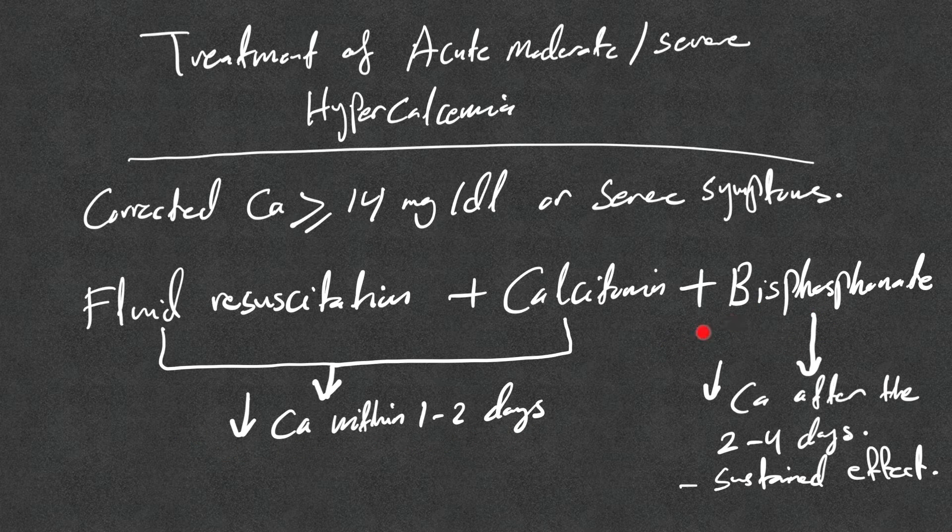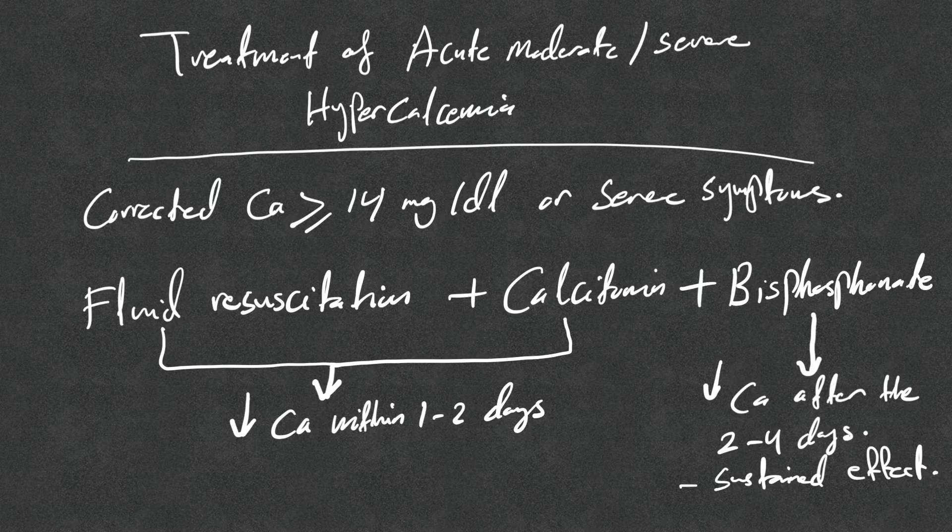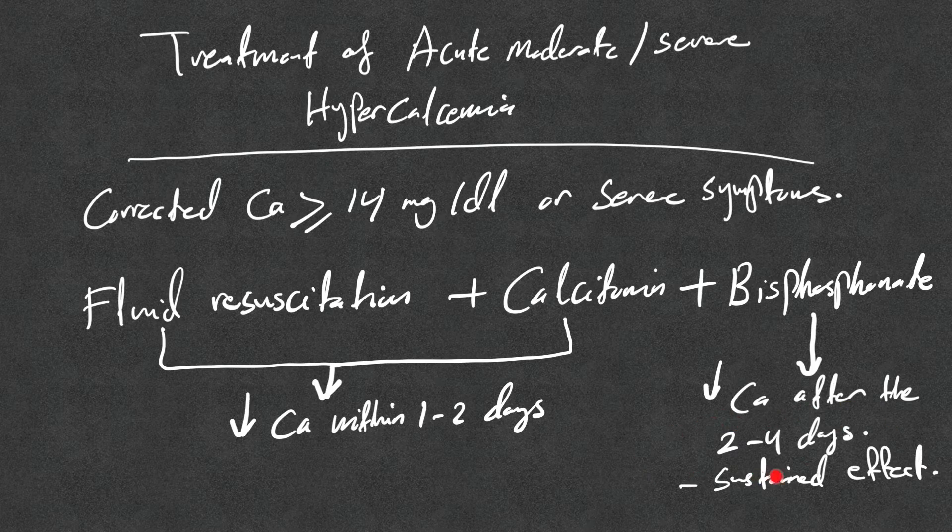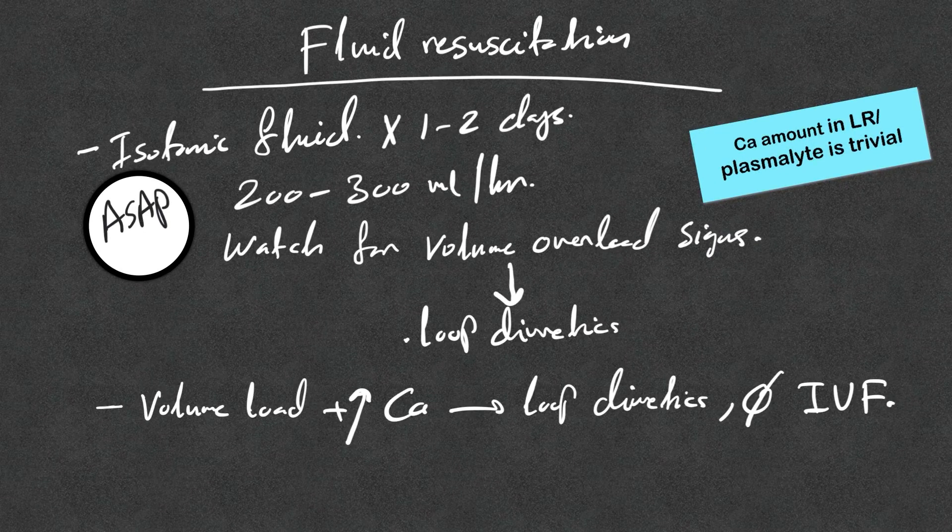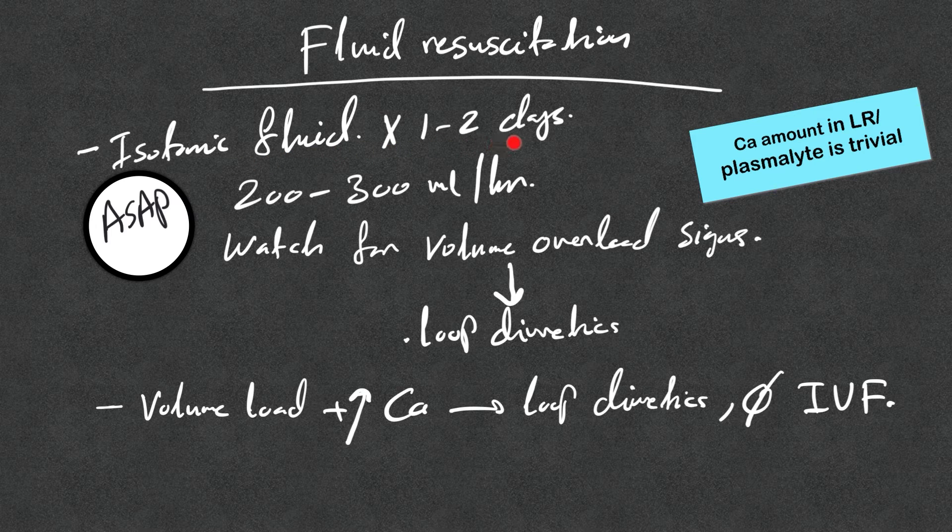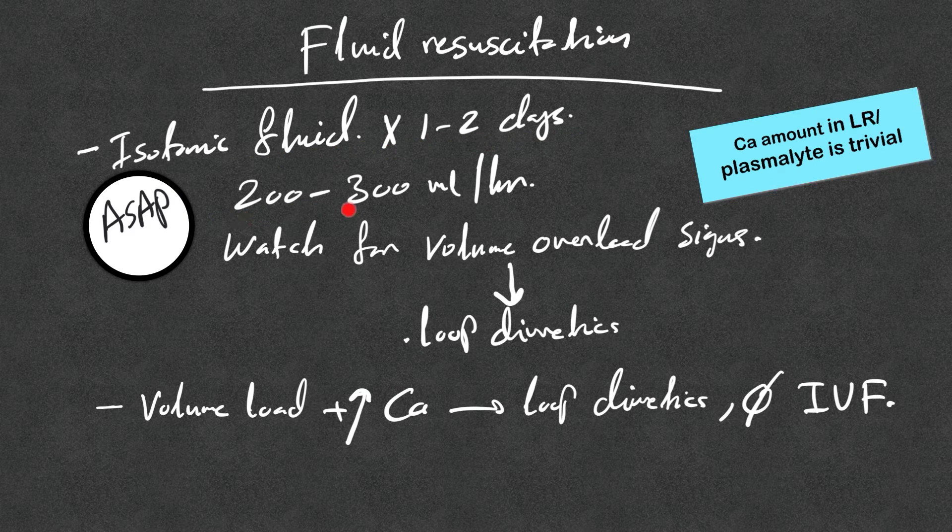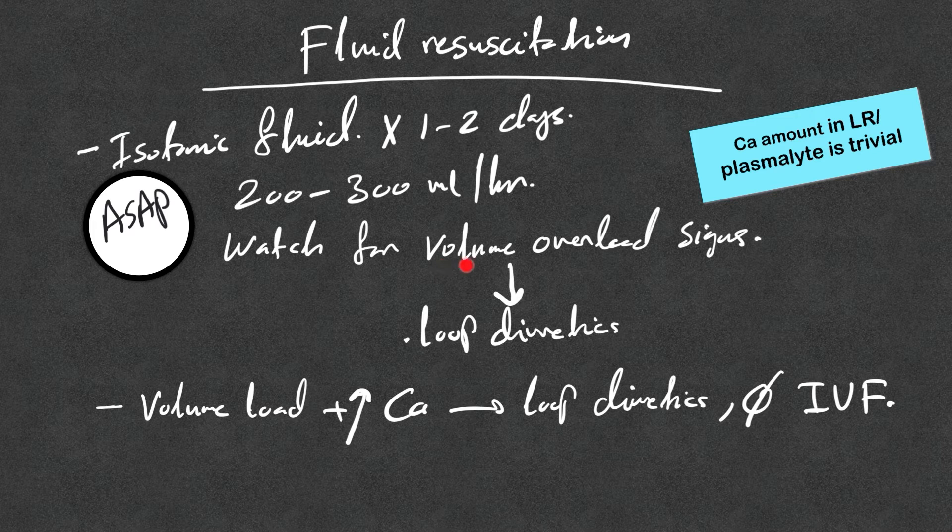The bisphosphonate helps with acute therapy but mainly for sustained effect and decreases calcium after two to four days. Fluid resuscitation: isotonic fluid for the first one to two days, 200 to 300 ml per hour, and watch for volume overload signs.